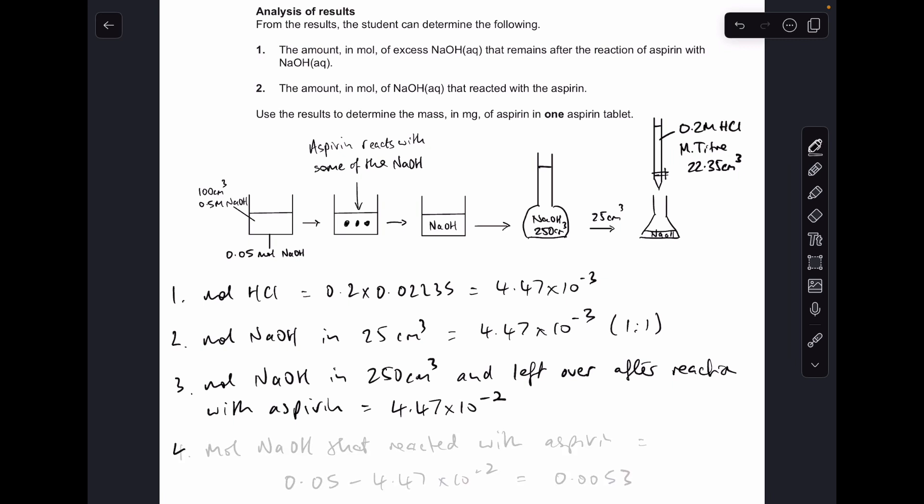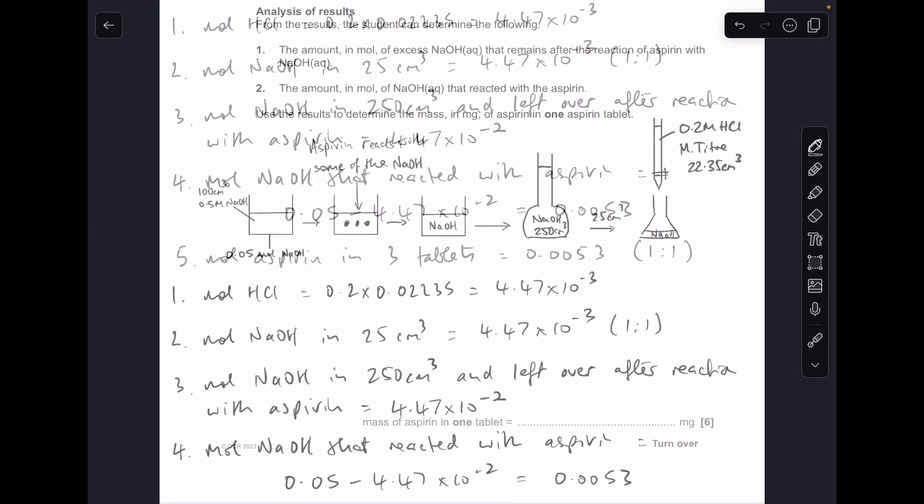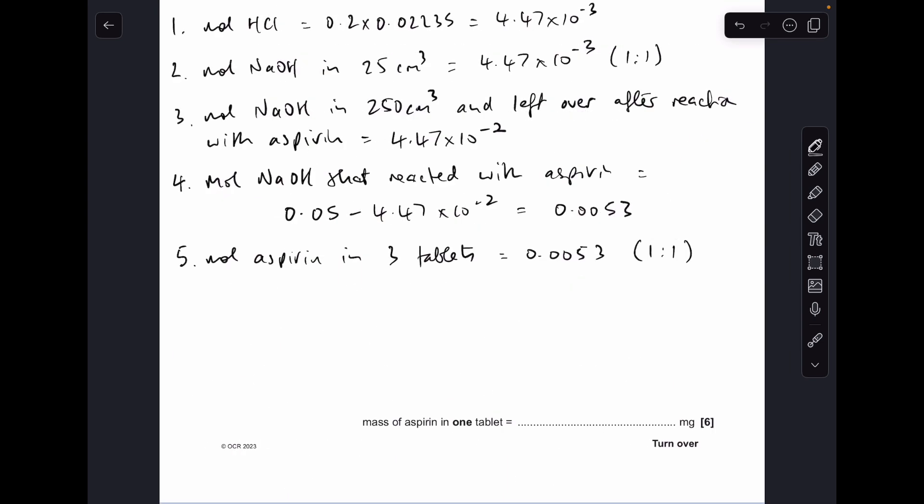Now we know the moles of sodium hydroxide left over after the reaction with aspirin, we can work out how many moles of sodium hydroxide actually reacted with the aspirin. That's the original moles minus that 4.47 × 10⁻²: 0.0053.